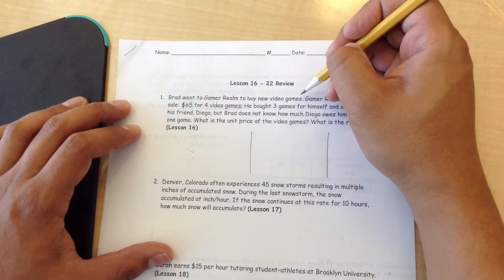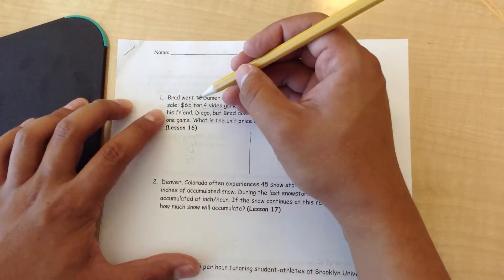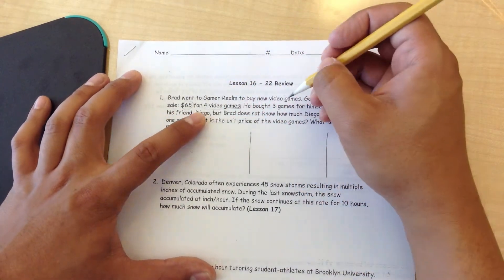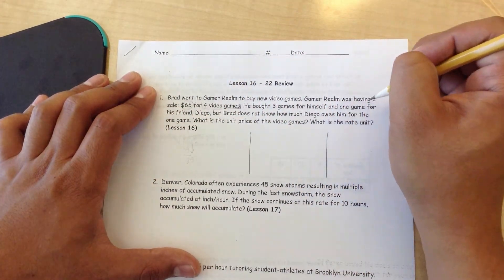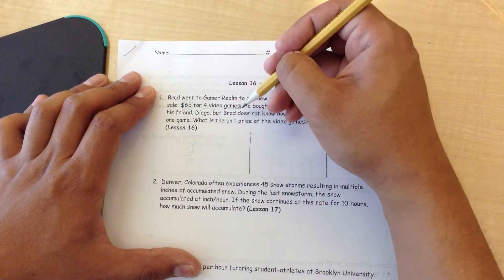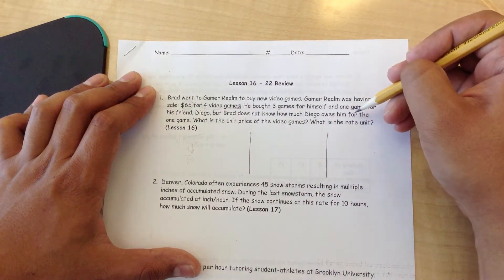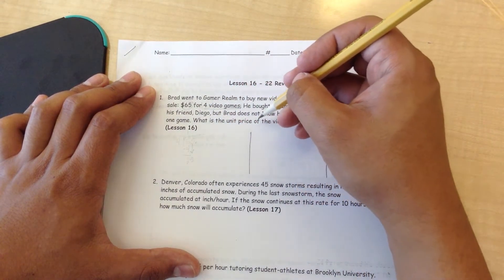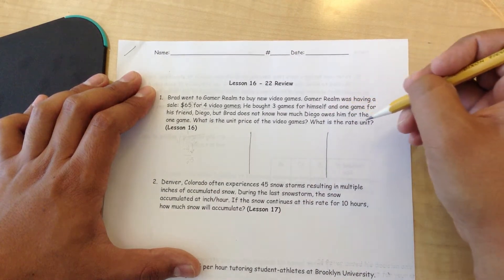Brad went to Gamer Realm to buy video games. Gamer Realm was having a sale of $65 for four games. He bought three games for himself and one game for his friend Diego. But Brad does not know how much Diego owes him for the one game. What is the unit price of the video games? What is the rate unit?